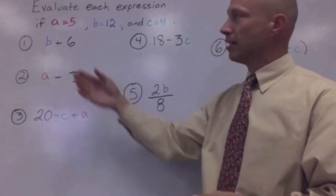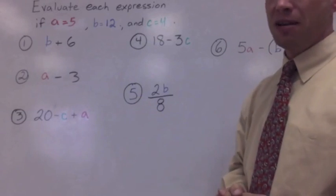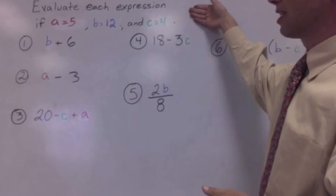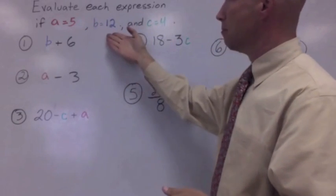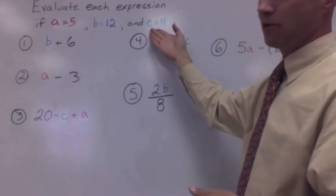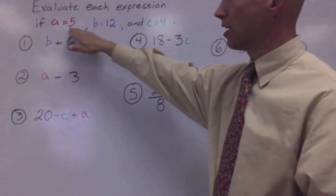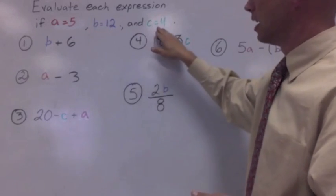We're going to start with number one. The expression is B plus six, and you can see our directions here say evaluate each expression if A equals five, B equals 12, and C equals four, and I've color coded those. All of our A's will be red, B's will be blue, and C's will be green.